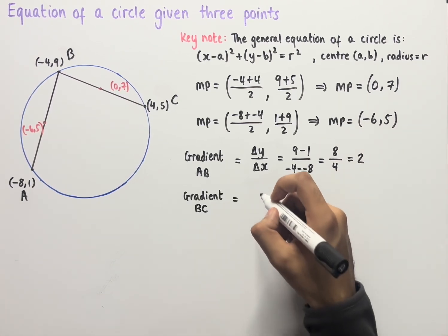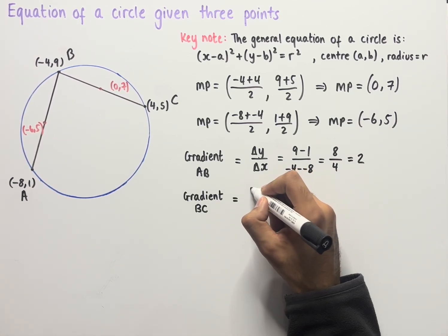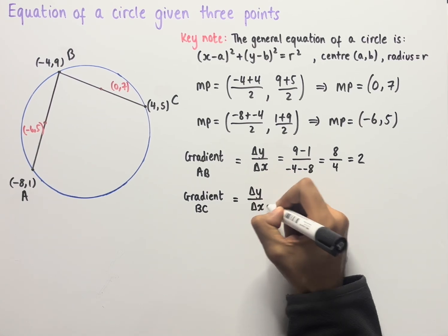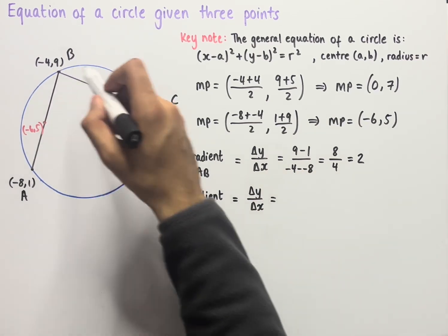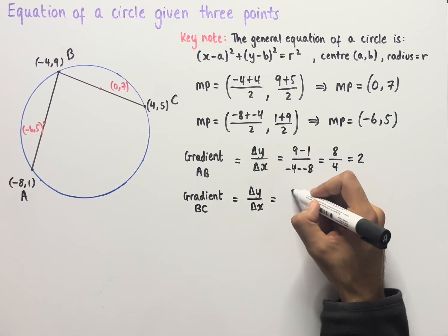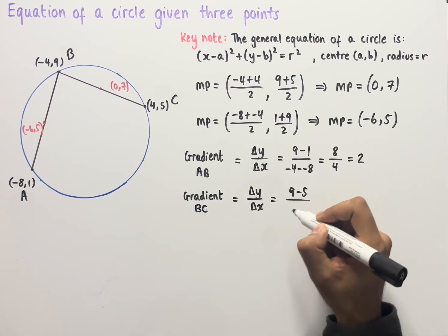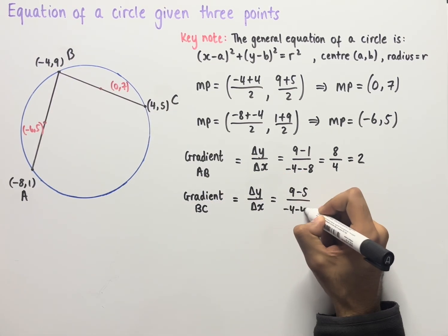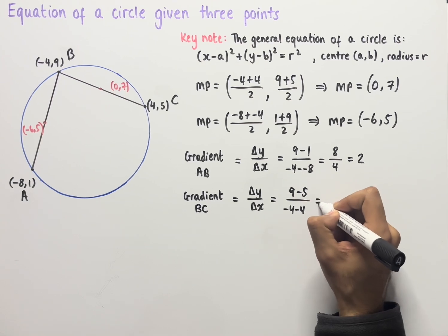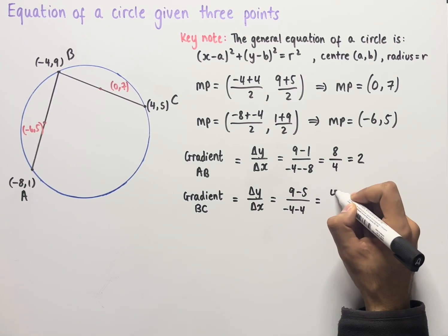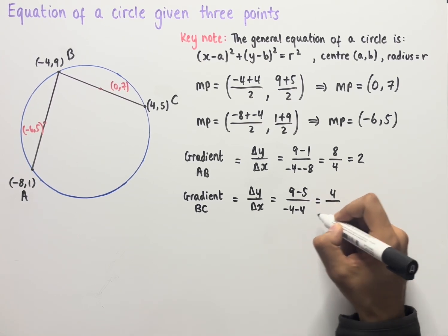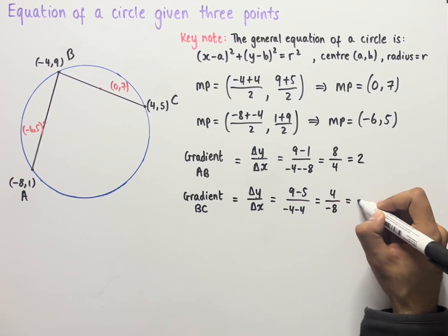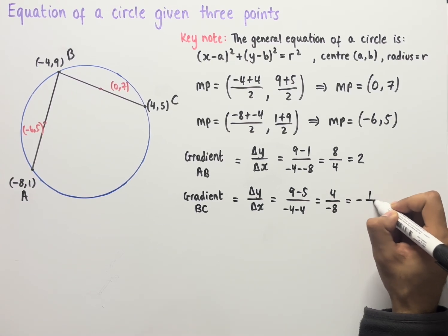Finding the gradient of chord BC, we again work out the change in y over the change in x. This time we have (9 - 5) / (-4 - 4). Simplifying, 9 - 5 equals 4, and -4 - 4 equals -8, so 4 divided by -8 gives a gradient of -½.